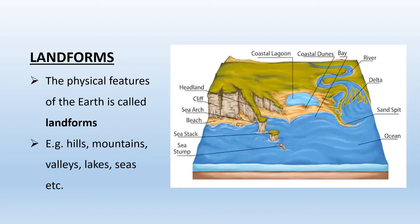What are landforms? The physical features of the earth are called landforms. Examples include hills, mountains, valleys, lakes, seas, etc. These are kinds of landforms. Let's talk about them in detail.